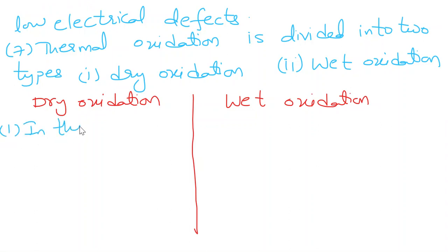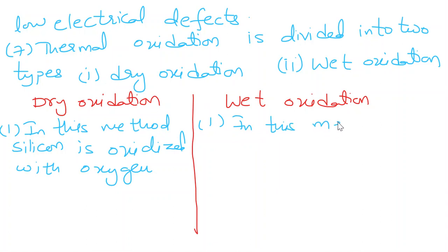In this method, silicon is oxidized with oxygen. In this method, silicon is oxidized with steam or water vapour.